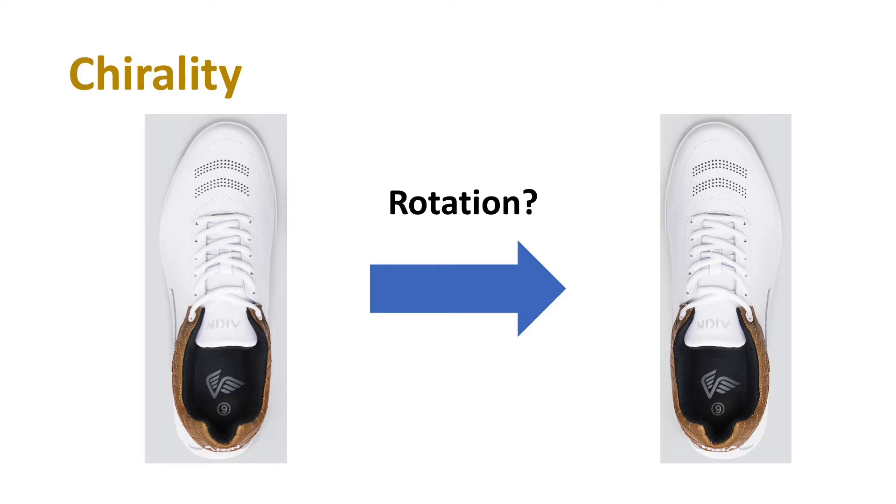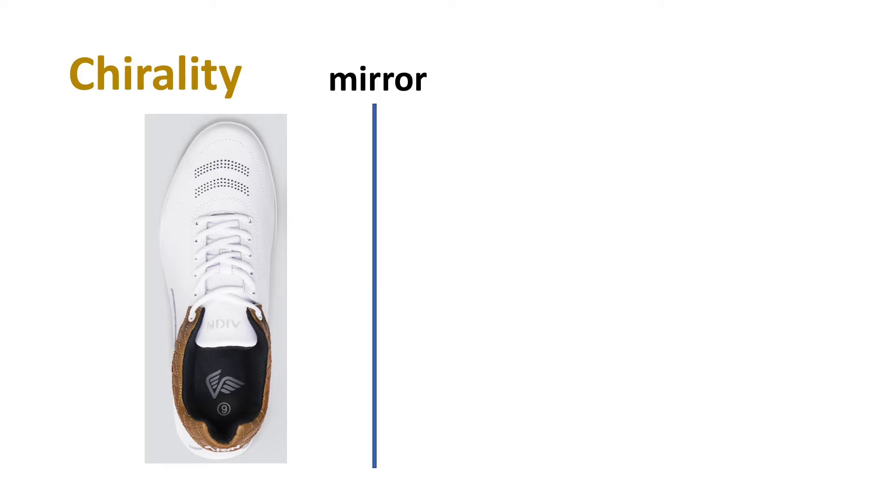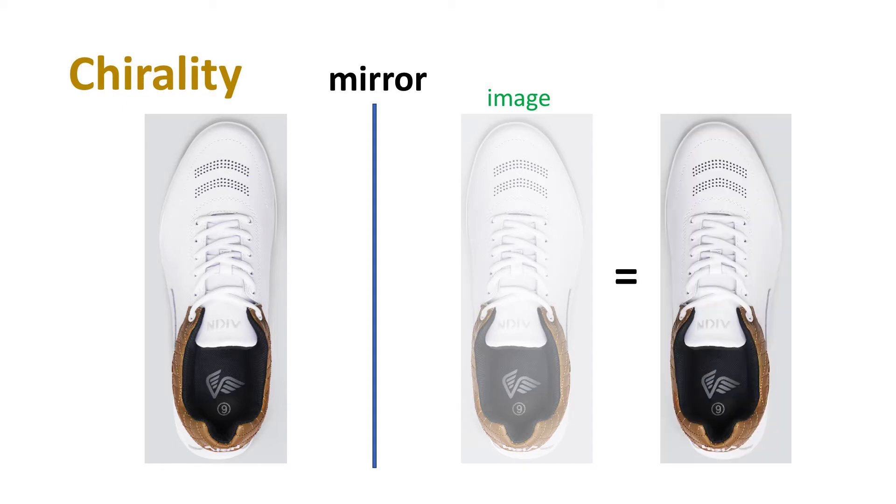Or simply to say, the left one cannot become the right one through rotation. If we place a mirror in the middle, the image of shoes on left will be the same as the real shoe on the right. With these properties, we call the shoes chiral objects.